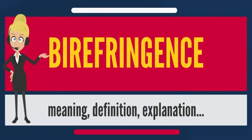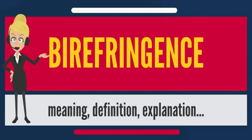The best characterized birefringent materials are crystals. Due to their specific crystal structures, their refractive indices are well defined. Depending on the symmetry of a crystal structure, as determined by one of the 32 possible crystallographic point groups, crystals in that group may be forced to be isotropic (not birefringent), to have uniaxial symmetry, or neither, in which case it is a biaxial crystal.